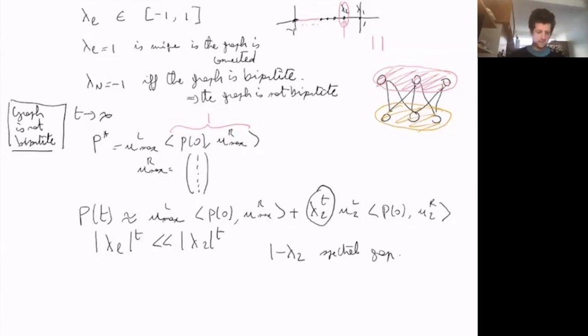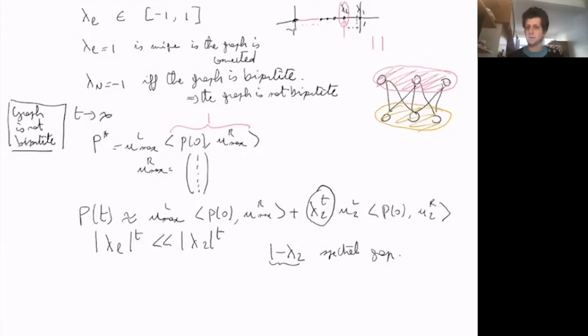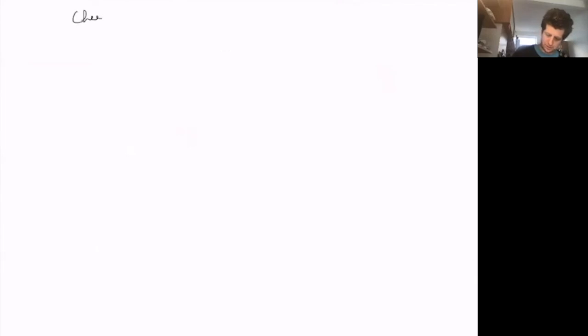The spectral gap relates to an important graph theory concept: the Cheeger inequality and the Cheeger constant, also called the conductance h. Given a graph, the conductance is defined as the minimum over all bipartitions (S, S̄) of the number of edges connecting S and S̄ divided by the minimum of the volume of S and the volume of S̄.